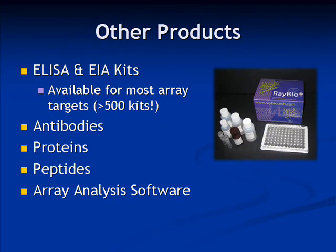Other products available at Ray Biotech include ELISA kits for nearly all the proteins included within the arrays. We also sell a variety of individual antibodies, proteins and peptides, as well as software for the analysis of antibody array data.